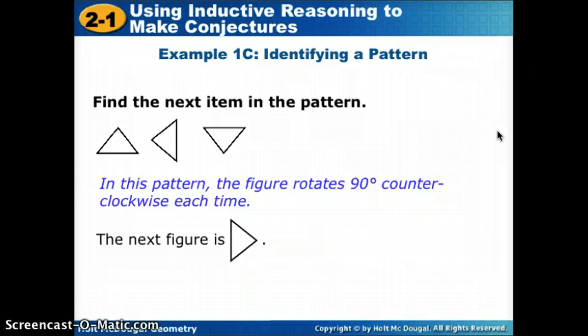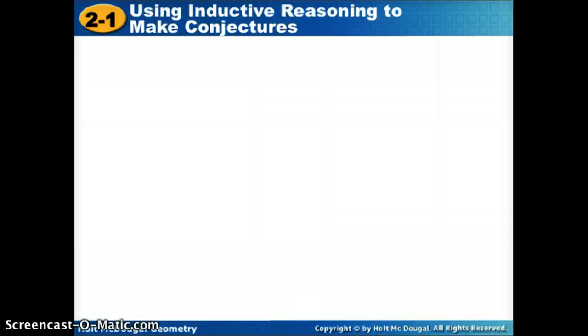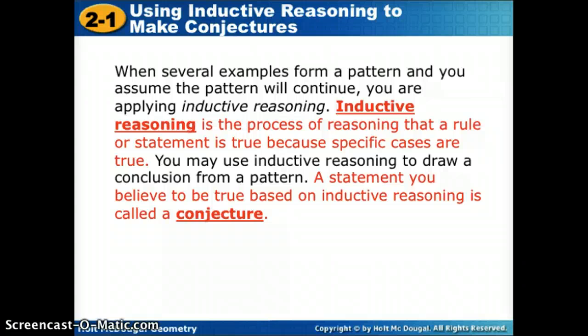So in each of these problems, we have looked at a pattern. We used our own intuition to figure out what would happen next. So nobody told us the pattern. We had to come up with it ourselves. We are using what we call inductive reasoning to do that. So when we look at a set of examples that form a pattern, we are assuming that that pattern will continue, so we're using inductive reasoning to decide what do we think is going to come next. So we are guessing, or we're creating a conjecture. So a conjecture is a statement we believe to be true based on our own intuition or our inductive reasoning.